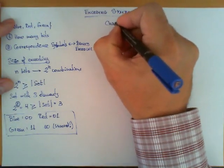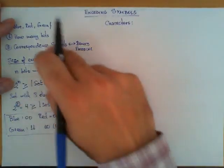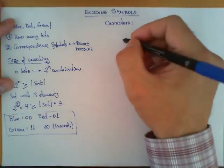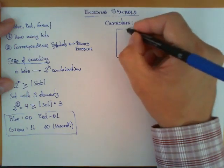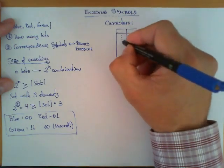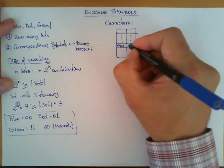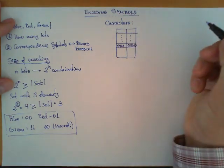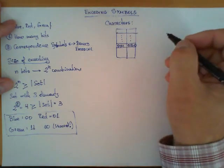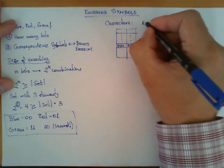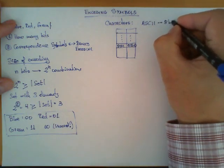This is a very simple example but there are other types of encodings that are already used in computers, like for example when we want to encode characters. First we have to agree on the number of bits, and then we define a correspondence which is typically a table. On one side of the column we have the symbol, and on the other one the zeros and ones, the binary combination.